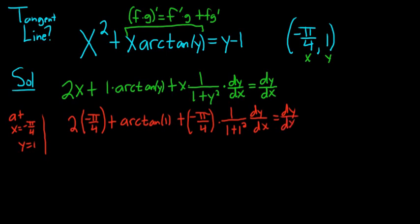Be really careful on this problem, it's really messy. 2 times negative pi over 4 is negative pi over 2. The arc tan of 1 is pi over 4, so have that memorized. This here is 1 half. So it's 1 half times negative pi over 4, so it's minus pi over 8, because 4 times 2 is 8, times dy dx equals dy dx.